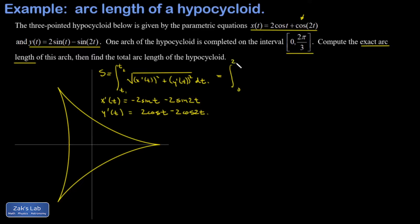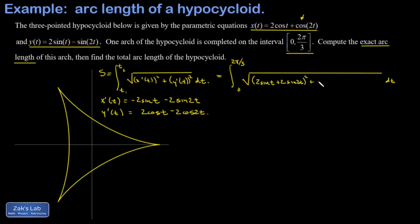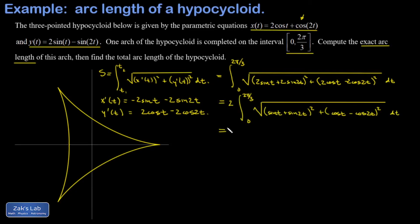We set up the integral from 0 to 2π/3, handling one arch and remembering to multiply by 3 at the end. In the x′(t) term, the minus signs don't matter since we're squaring — the negative factors out and becomes +1 when squared — so we write (2sin(t) + 2sin(2t))². The second term becomes (2cos(t) − 2cos(2t))². Each term has a factor of 2, which when squared gives 4, and that 4 factors out of the square root as a 2 in front of the integral.